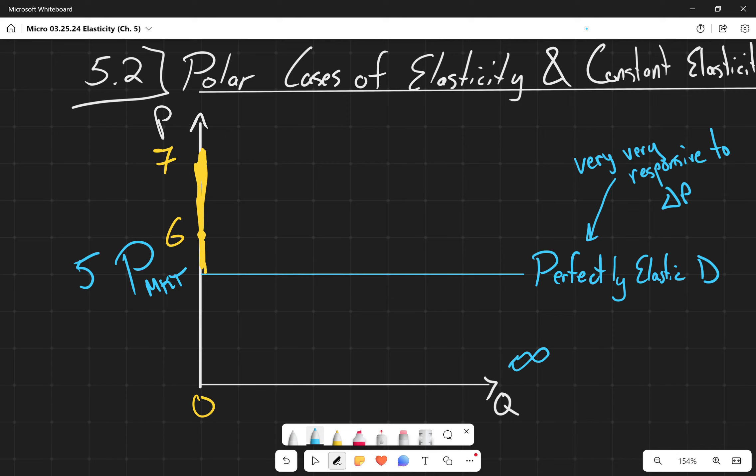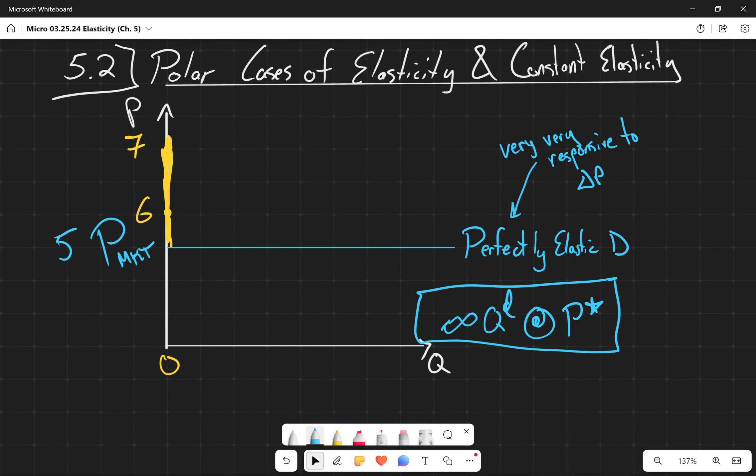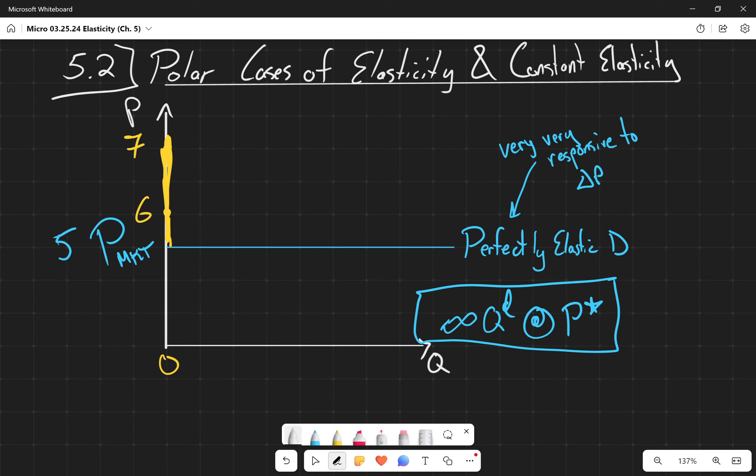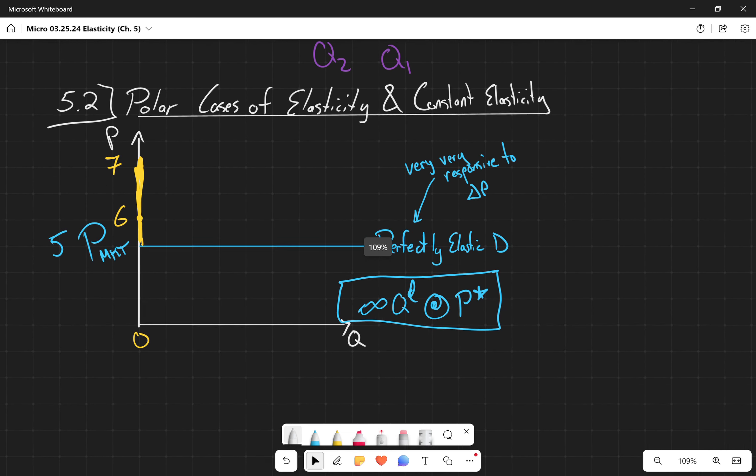So it's infinity quantity demanded at P star, which again doesn't make a heck of a lot of sense, but it's theoretical. Our second kind of extreme case for elasticity...